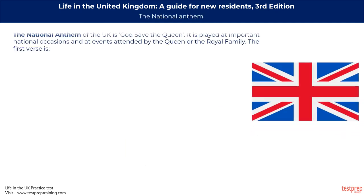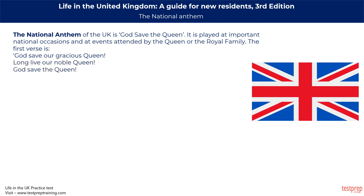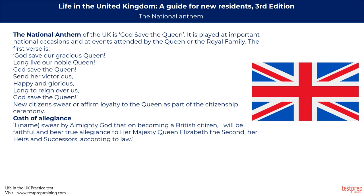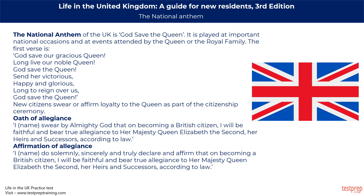The National Anthem of the UK is God Save the Queen, played at important national occasions and at events attended by the Queen or the Royal Family. The first verse is: 'God save our gracious Queen, long live our noble Queen, God save the Queen. Send her victorious, happy and glorious, long to reign over us, God save the Queen.' New citizens swear or affirm loyalty to the Queen as part of the citizenship ceremony. The Oath of Allegiance states: 'I, [name], swear by Almighty God that on becoming a British citizen, I will be faithful and bear true allegiance to Her Majesty Queen Elizabeth II, her heirs and successors, according to law.' The Affirmation of Allegiance states: 'I, [name], do solemnly, sincerely and truly declare and affirm that on becoming a British citizen, I will be faithful and bear true allegiance to Her Majesty Queen Elizabeth II, her heirs and successors, according to law.'